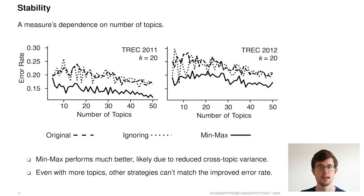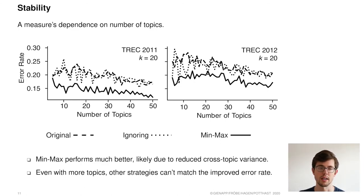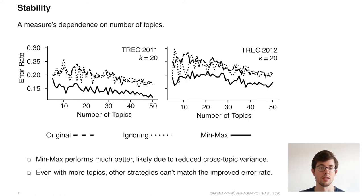Finally, the stability of a measure is its dependence on the number of topics — that is, how many topics are needed to reach a certain error rate for system evaluation. Here, min-max performs much better, likely because of the reduced cross-topic variance due to the restricted interval. Even at higher topic counts, the other two strategies cannot match this improved error rate.